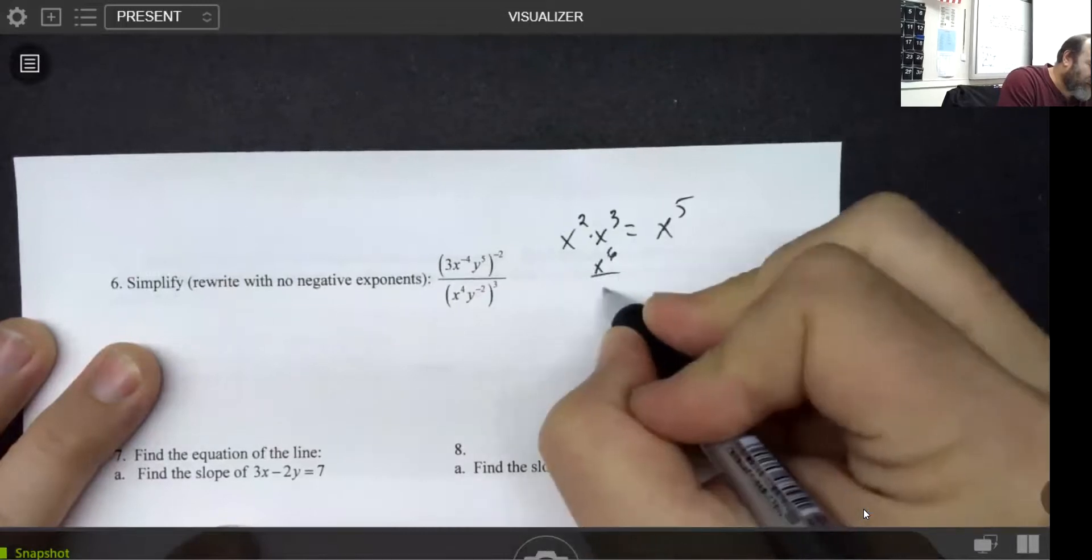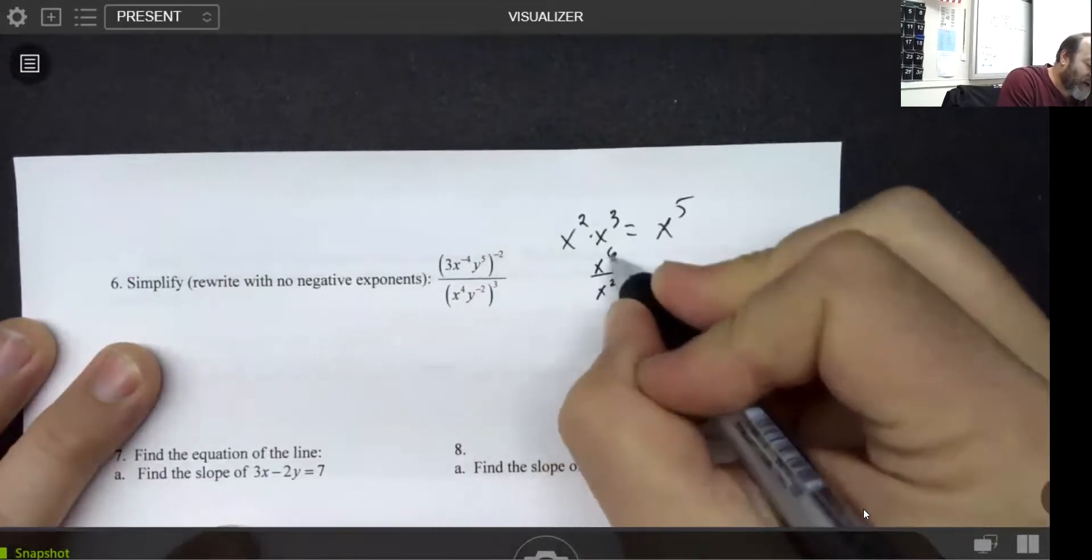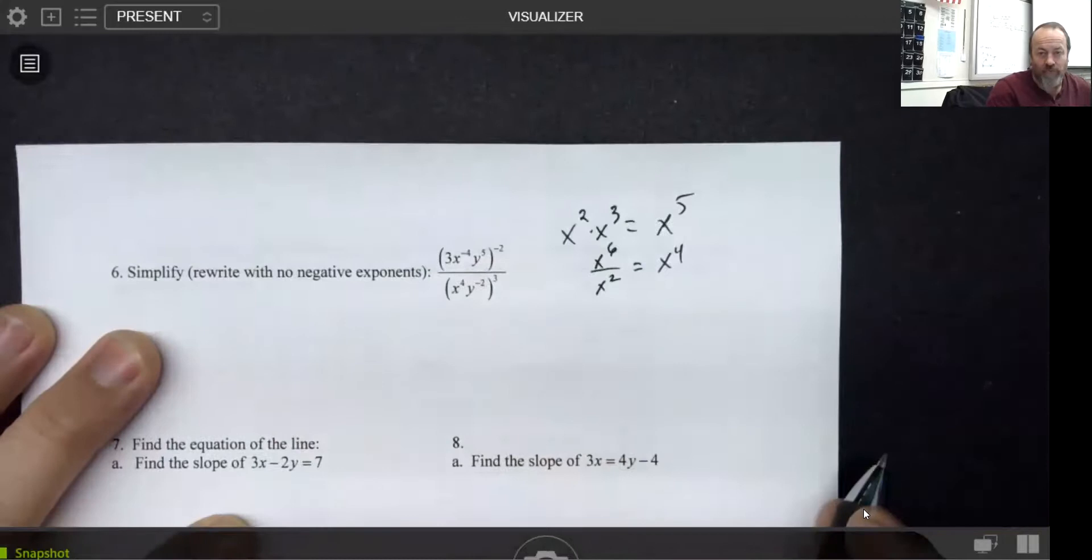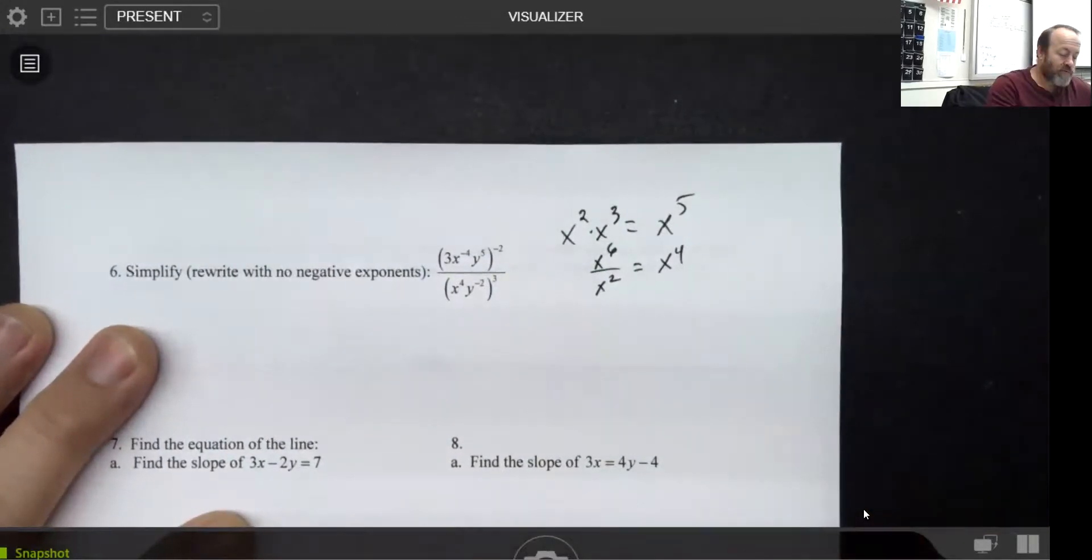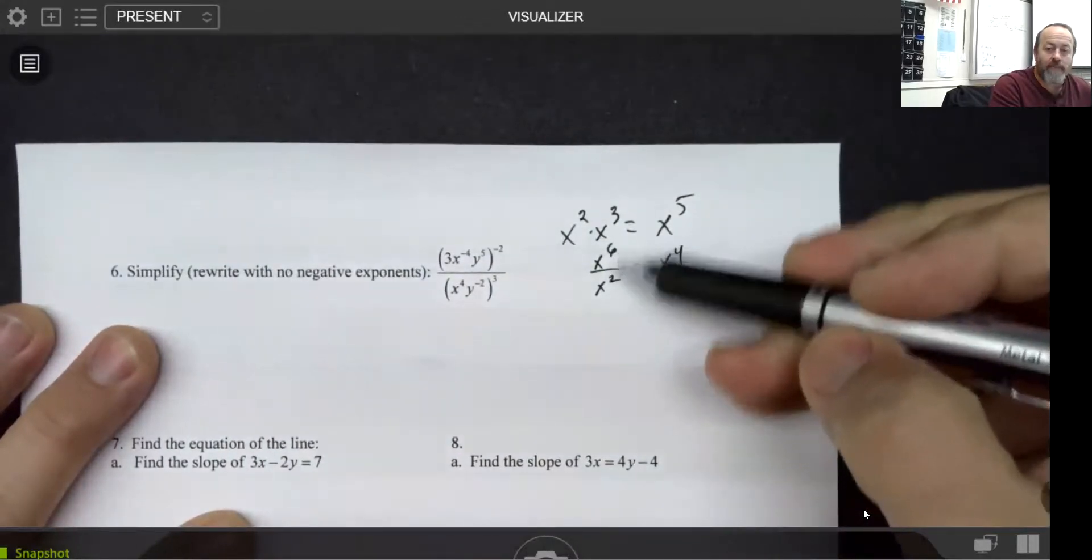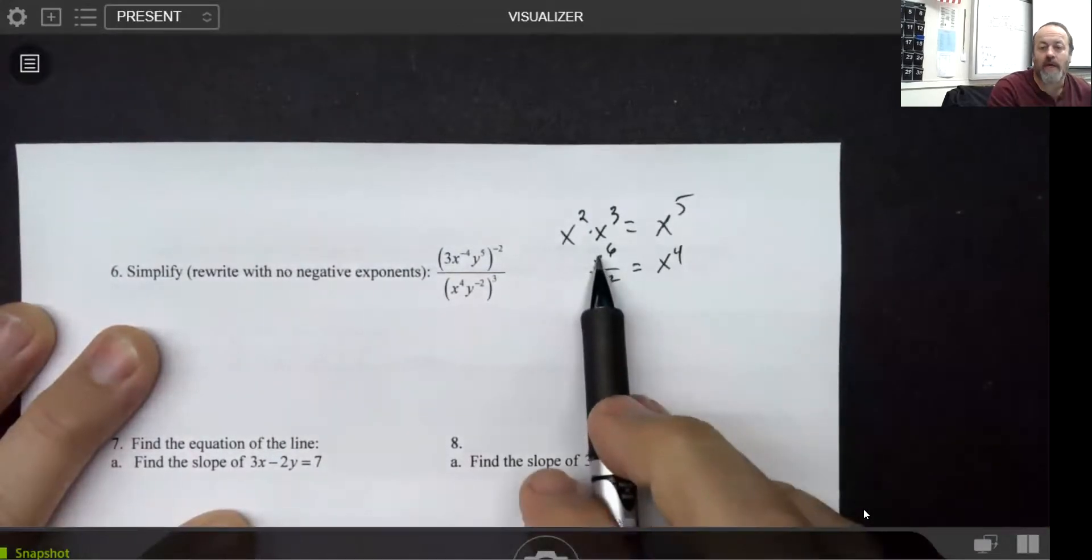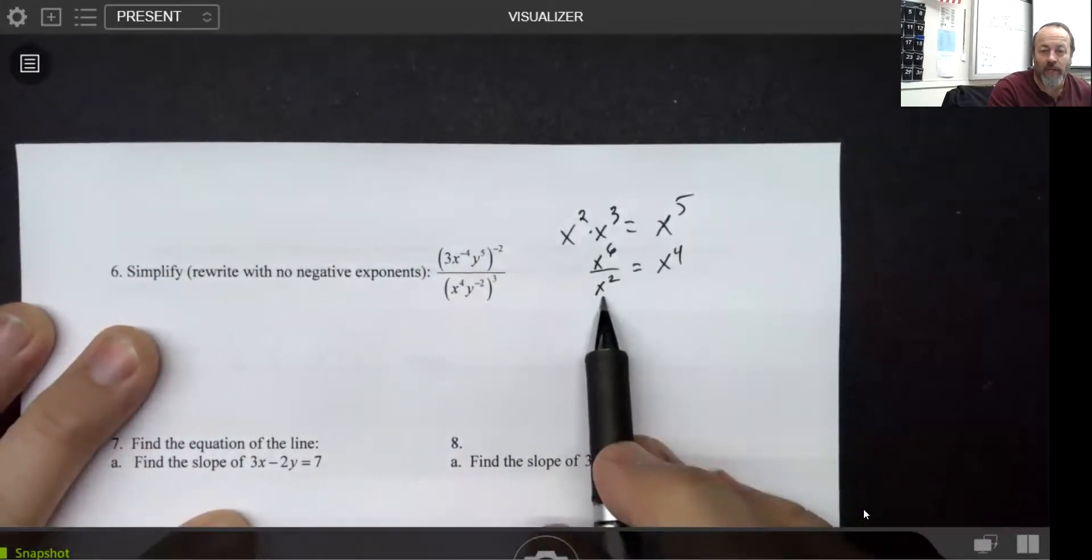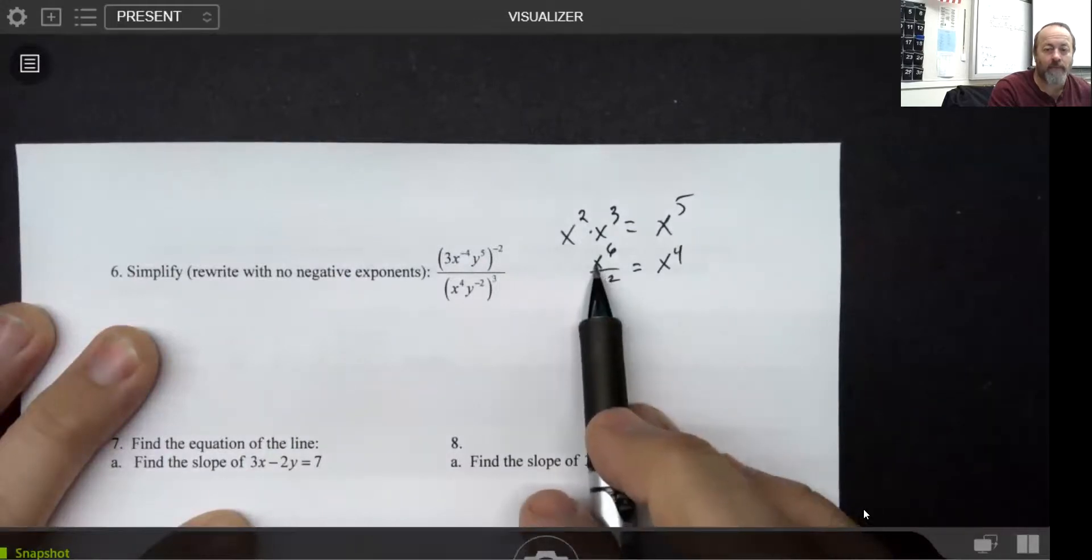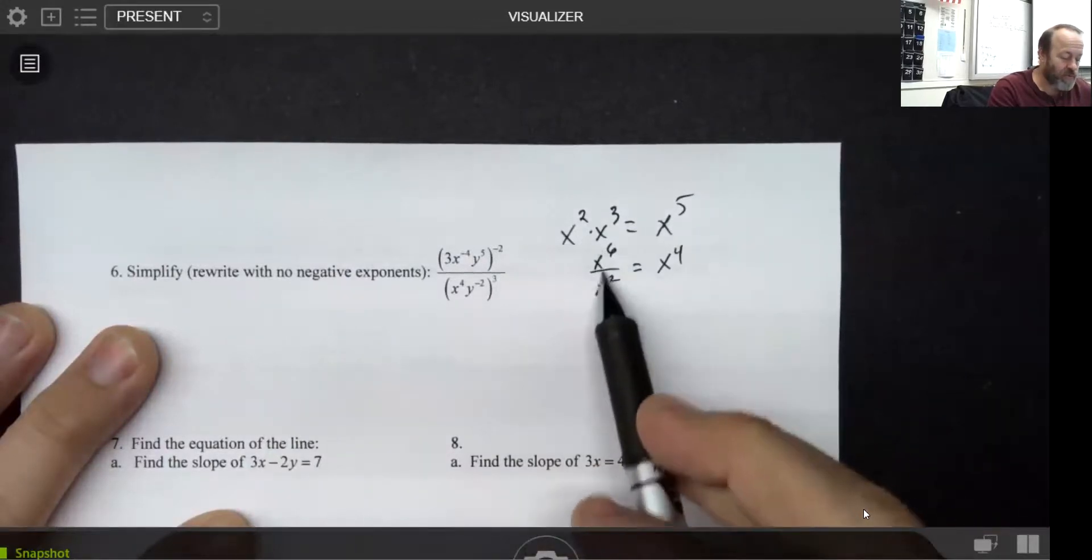Connected skill: if you had x to the sixth divided by x to the two, you get x to the fourth. When you divide things with the same base, you subtract your exponents. And in this case, since the x to the sixth was on top, it would lead to x to the fourth. But if it had been at the bottom, if these had been reversed, it would be one over.